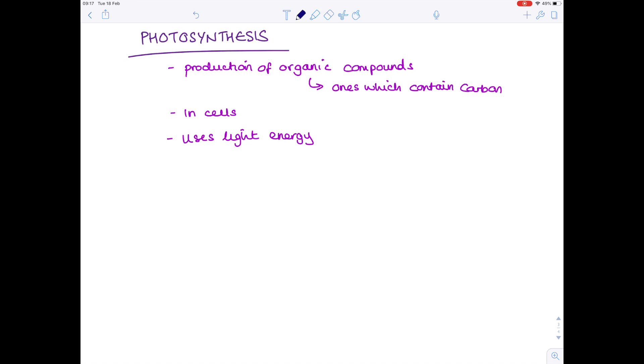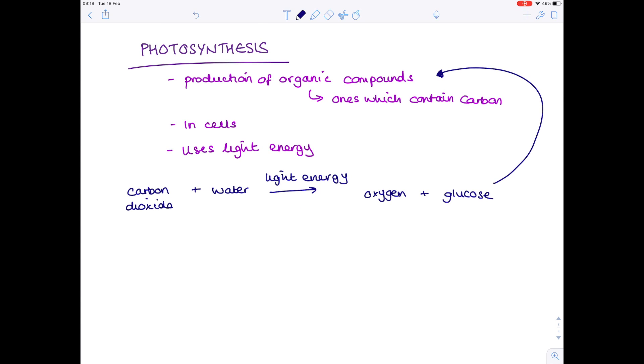So what is the summary equation for photosynthesis? Well, it's carbon dioxide, water, we use light energy. Without light energy this process cannot take place. And we produce oxygen and glucose, and remember it's that glucose which is our carbon containing compound. So that first summary point, the production of organic compounds, really we're talking about glucose here. If we were to convert that to a simple equation...